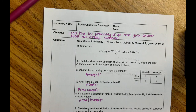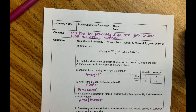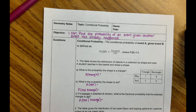Today we're going to look at conditional probability — finding the probability of an event given that another event has already happened. We're going to use frequency tables. The key word is 'given': not what's the probability of this and then that happening, but this has already happened, so now what's the probability of this next event happening.